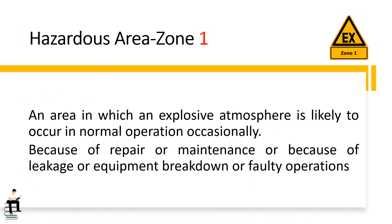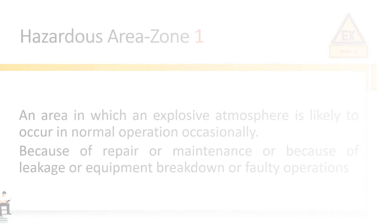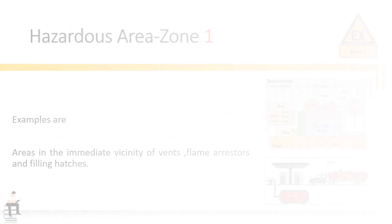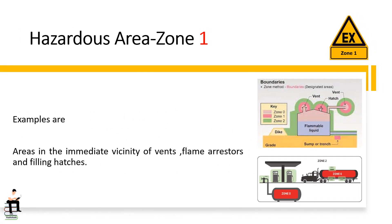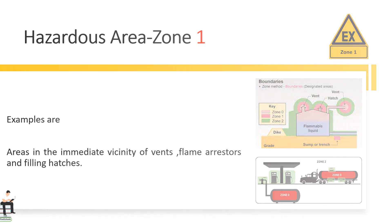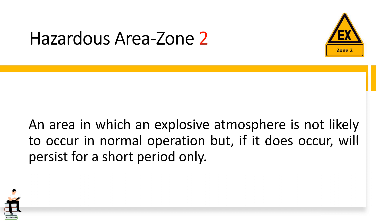Zone 1 is an area in which an explosive atmosphere is likely to occur in normal operation occasionally, because of repair or maintenance, or because of leakage, equipment breakdown, or faulty operations. Examples include areas in the immediate vicinity of vents, flame arresters, and filling hatches.